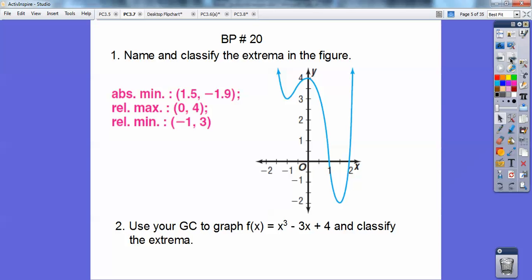So absolute minimum at, looks like that's at 1.5 comma negative 1.9, I guess. I don't know, I would have said negative 2. And then you've got a relative max at 0, 4 and a relative min at negative 1, 3. We've got those ones right.